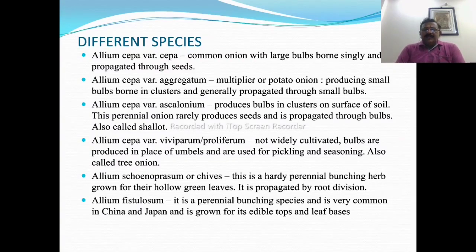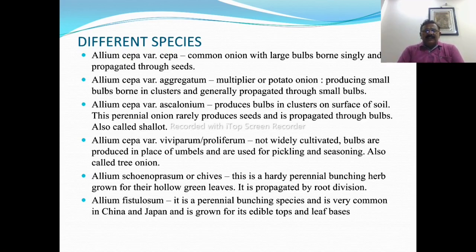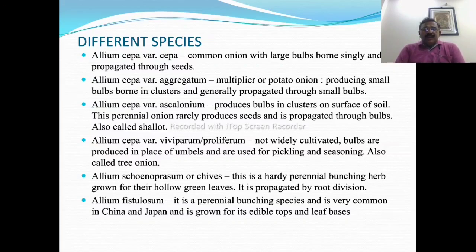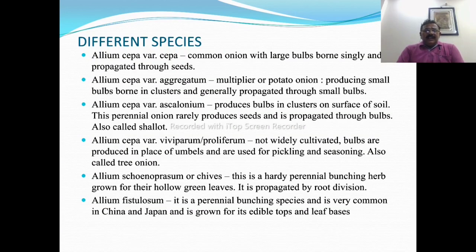Allium cepa variety ascalonicum produces bulbs in clusters at the surface of the soil. This perennial onion rarely produces seeds and is propagated through bulbs, also called shallot. Allium cepa variety viviparum or proliferum is not widely cultivated but bulbs are produced in place of umbels and are used for pickling and seasoning, also called tree onion.